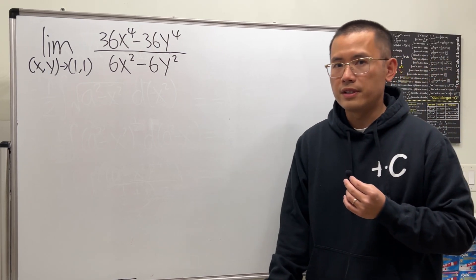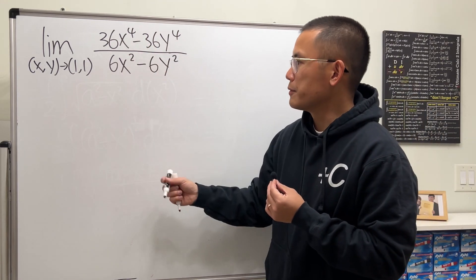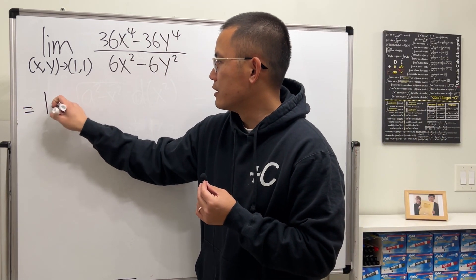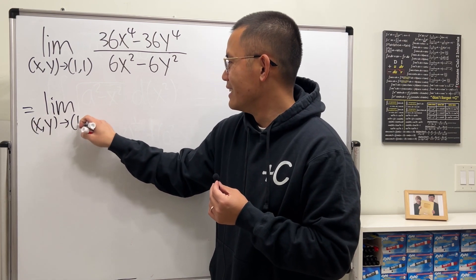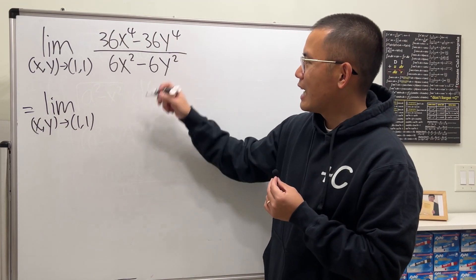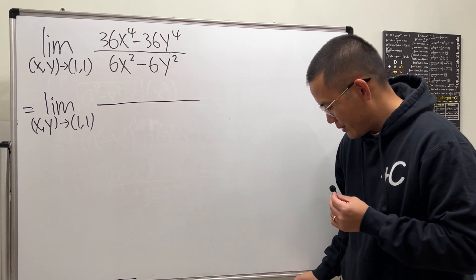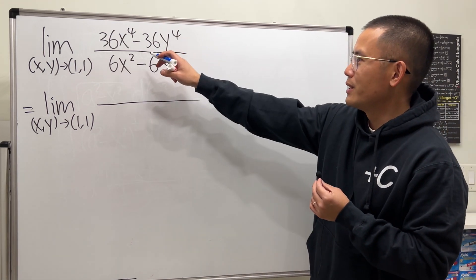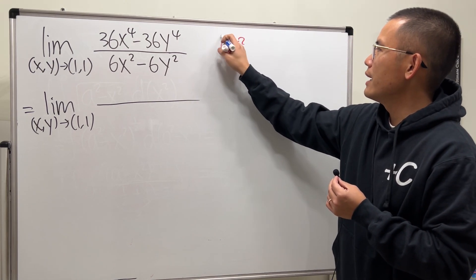But this one is more just the algebra - it's like Calc 1 because you notice you can factor stuff. So I'm just going to factor all the stuff. On the top, let's just factor it as a difference of two squares, right away.